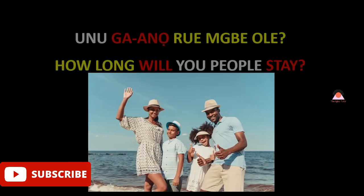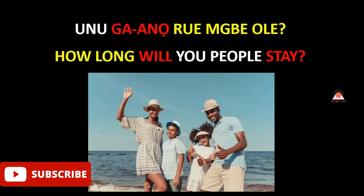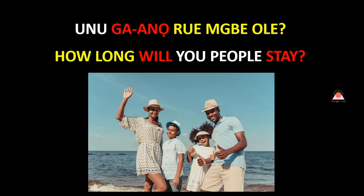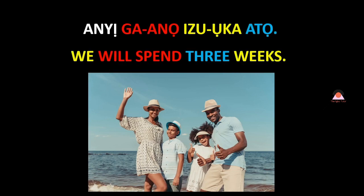Moving to the next conversation, which is a response: 'anye ga anon izu ka ato' — we will spend three weeks. 'Izu' is a local week, but 'izu ka' is a traditional normal week in a calendar. 'Anye ga anon izu ka ato' — we will spend three weeks.